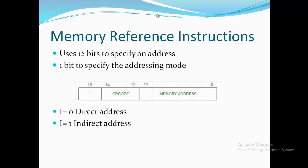The first one is memory reference instructions. A memory reference instruction uses 12 bits to specify an address from 0 to 11, 3 bits for opcode from 12 to 14, and the last one bit to specify the addressing mode. i equals 0 for direct address and i equals 1 for indirect address.